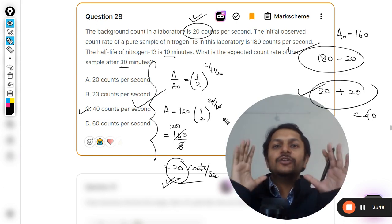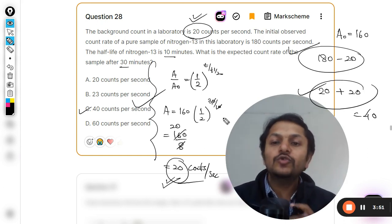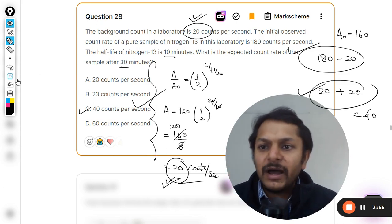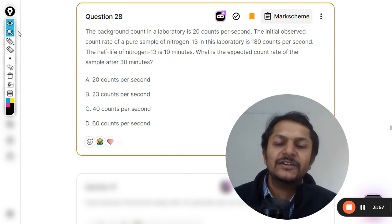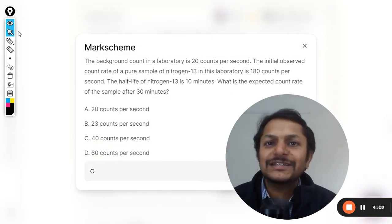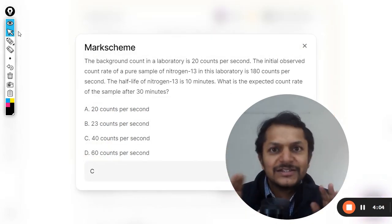So your answer is 40. There are three steps: step number one, step number two, and step number three, and your answer is 40. This is how we do all the counts per second kind of questions. My answer for this question is C, and let us see what is the answer given in the mark scheme. Yes, the answer is C as per the mark scheme.